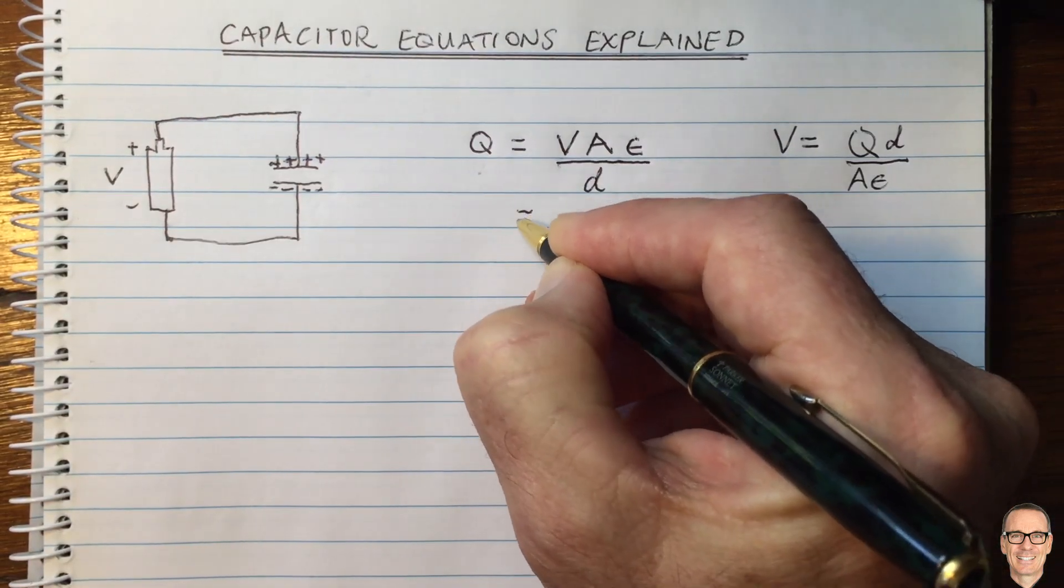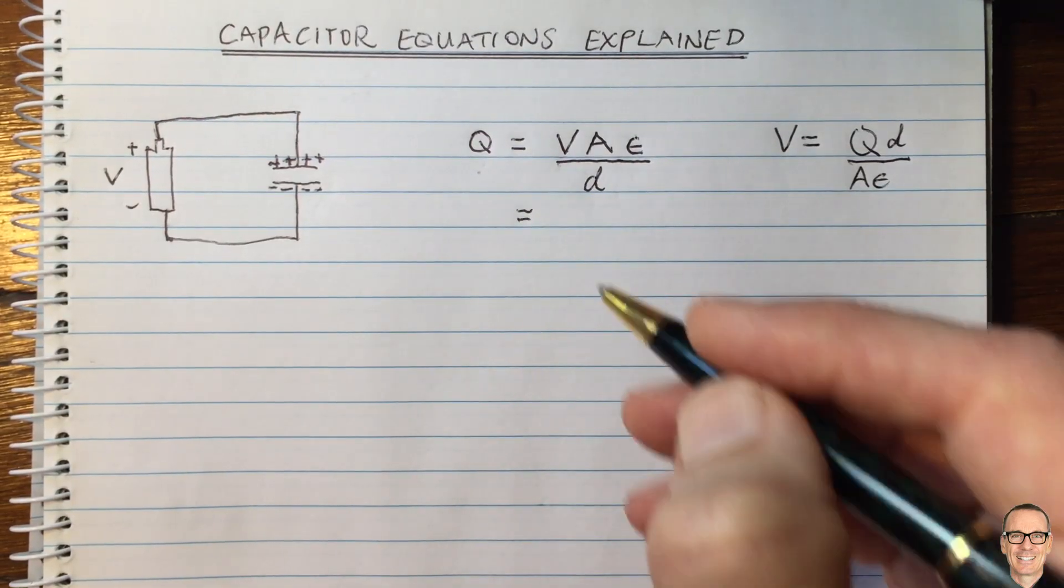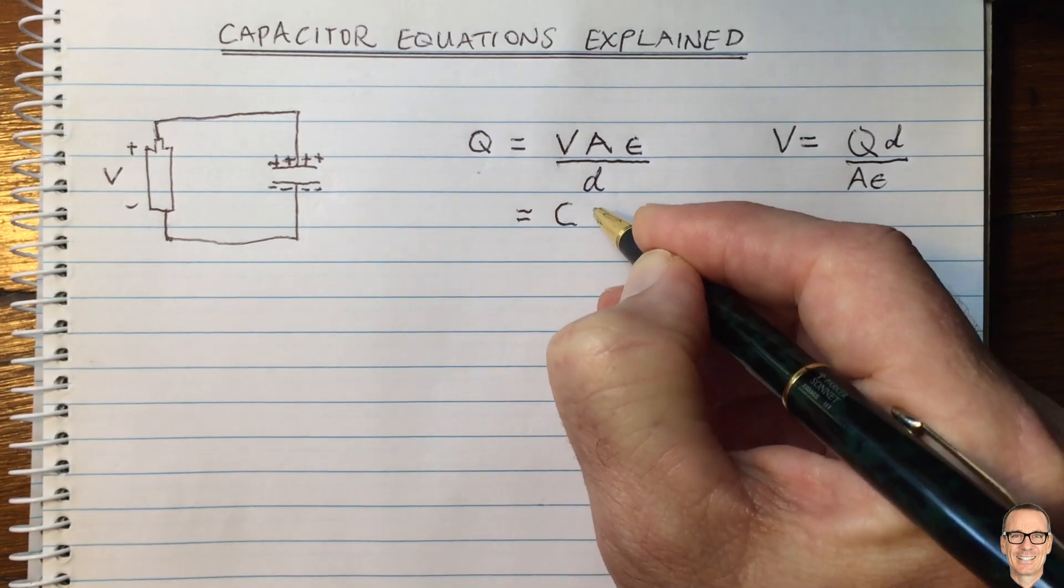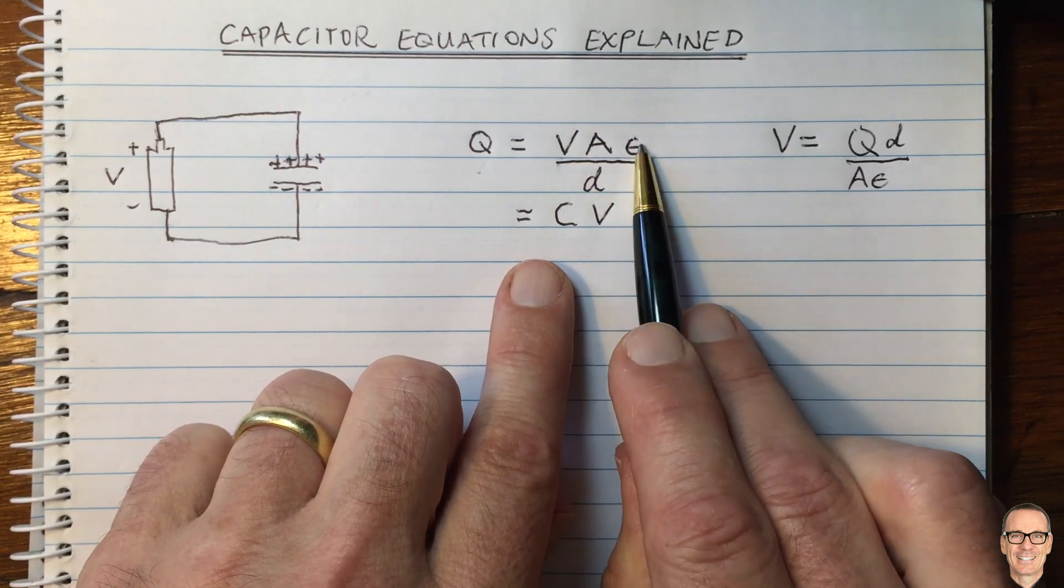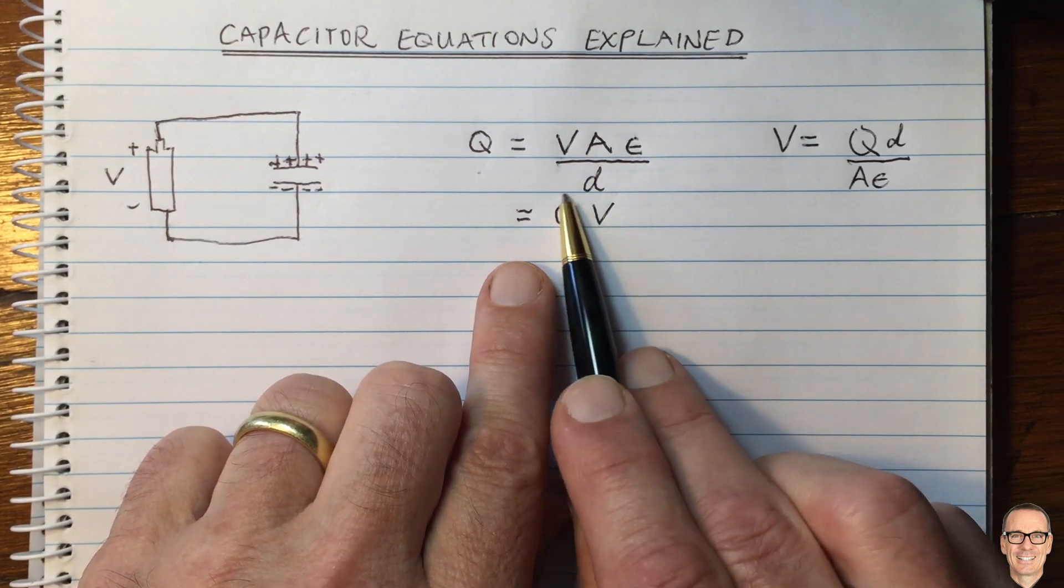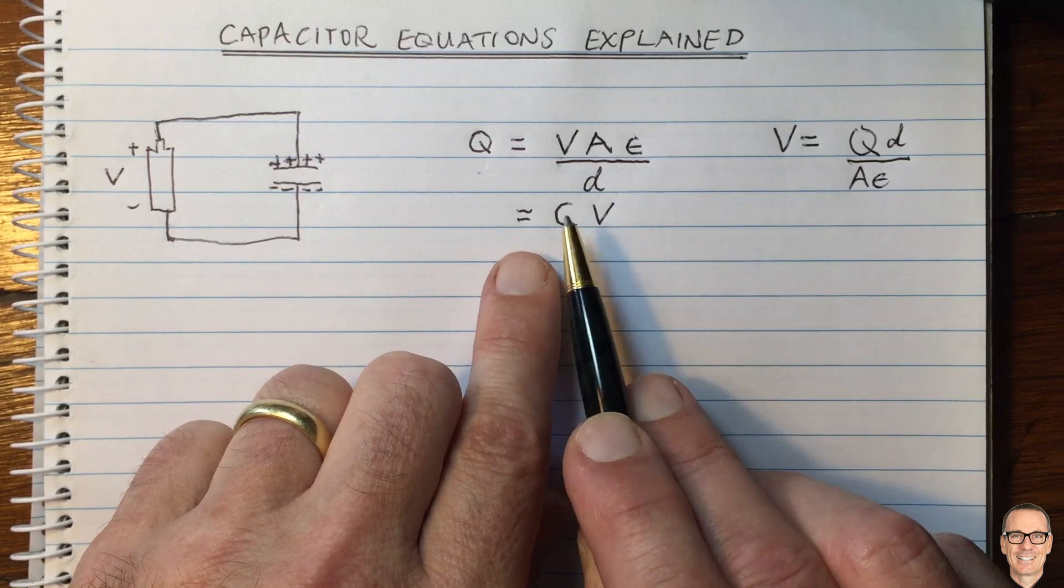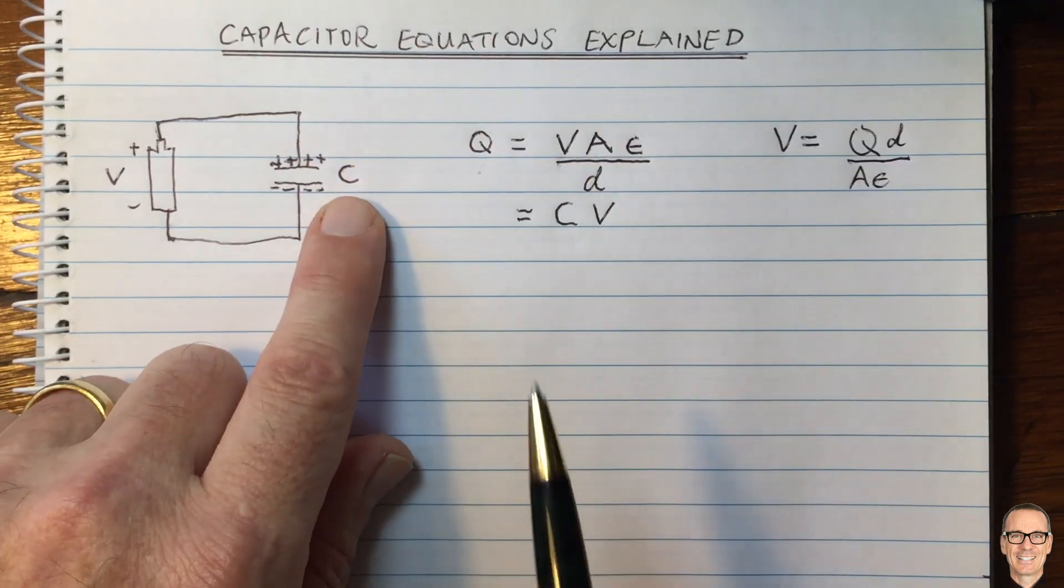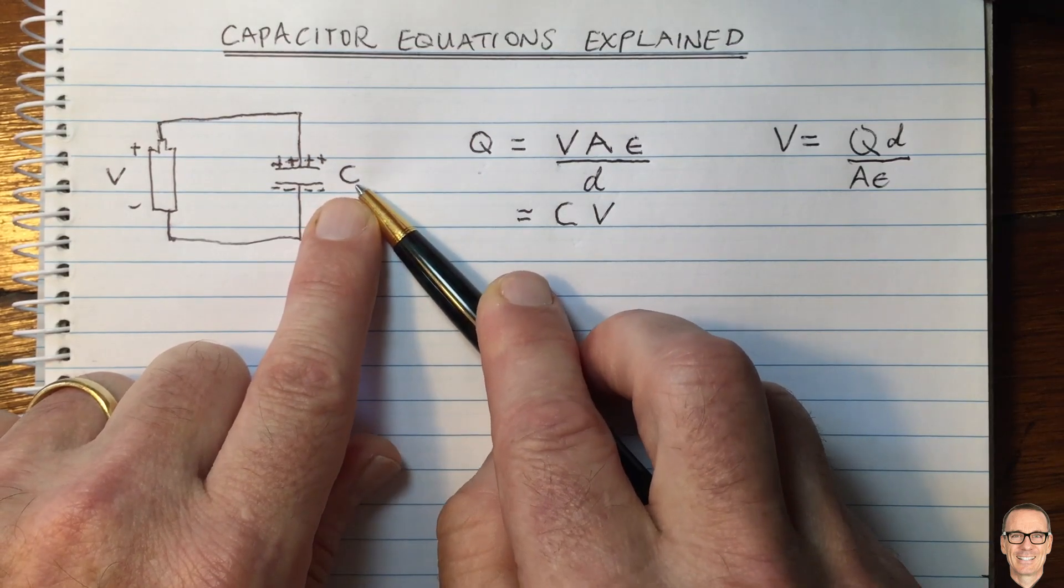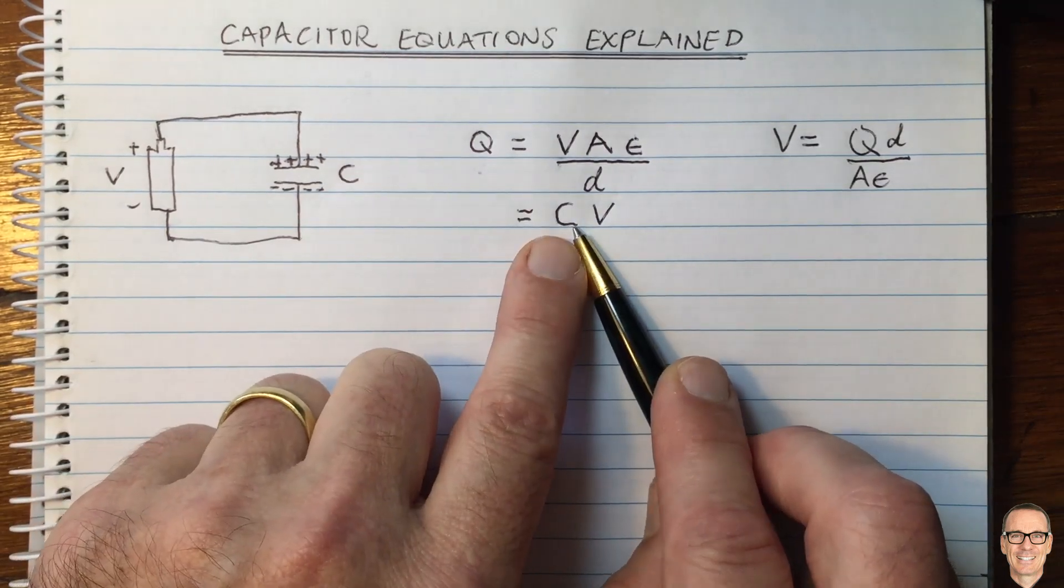This way also gives us a way of writing it in terms of what this term is that we call capacitance. So this term here, area times permittivity divided by distance, we call that capacitance. That is the capacitance when you see a capacitor and it's got a certain amount of farads. That is what it's talking about.